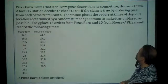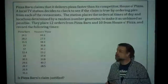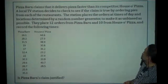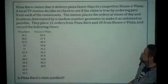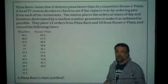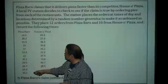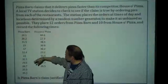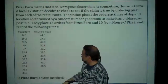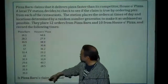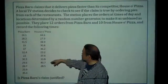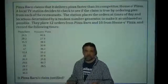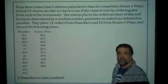A local TV station decides to check if the claim is true by ordering pies from each of the two restaurants. The station places orders at times and locations determined by a random number generator to make it as unbiased as possible. They place 12 orders from Pizza Barn and 10 from House of Pizza. Pizza Barn's times range from about 19 to 35 minutes; House of Pizza goes from about 23 to 44 — so perhaps Pizza Barn's claim is legitimate.